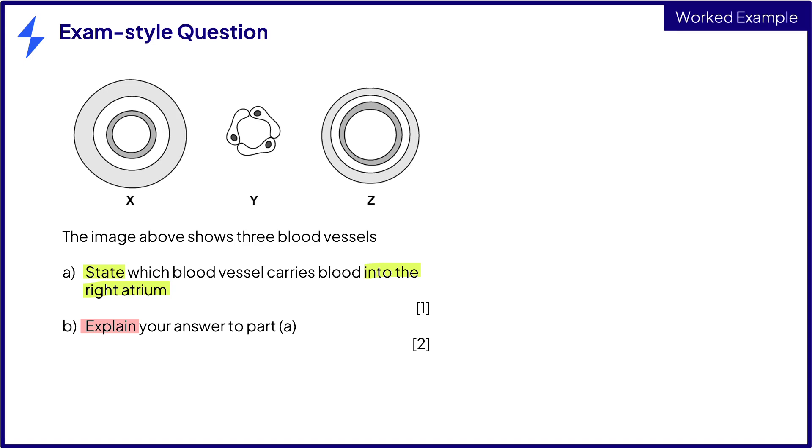For part A, we need to first remind ourselves what type of blood vessels enter and leave the heart. The acronym VEAL here is really helpful. Veins enter, arteries leave. So the vessel must be a vein. Now we need to work out from the diagram which is the vein. We can see that Y is only one cell thick, so this should immediately jump out to you as a capillary. Between X and Z we can see that they have similar structures, but X has a much smaller lumen and thicker walls than Z. This is a good indication that X is an artery and Z is a vein. So the answer to part A is Z for one mark.